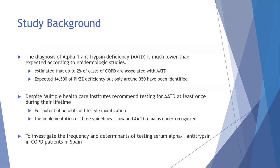This study was conducted because diagnosis of alpha-1 antitrypsin deficiency is much lower than expected in Spain. Up to 2% of COPD cases may be associated with alpha-1 antitrypsin deficiency; Spain is expected to have about 14,500 individuals with severe homozygous PI*ZZ phenotype, yet only about 350 have been identified in their registry. Despite WHO, Spanish national COPD guidelines, ATS, and ERS recommendations to test at least once during a patient's lifetime, most patients are not tested.